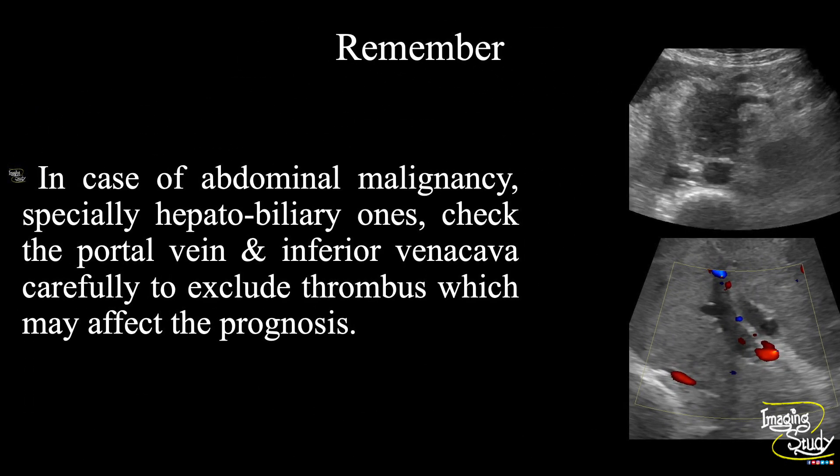The take-home message: in case of any abdominal malignancy, especially hepatobiliary ones, always carefully check the portal vein and inferior vena cava to exclude thrombus, as this may affect the prognosis of the malignancy.